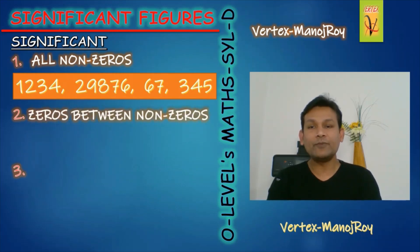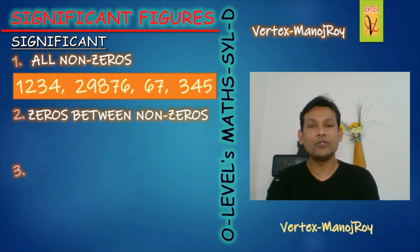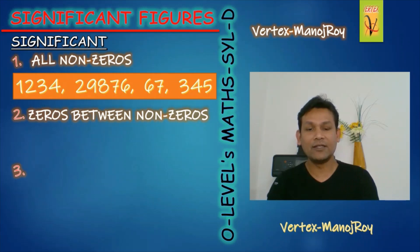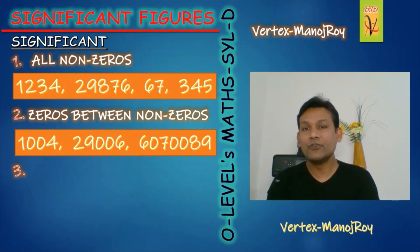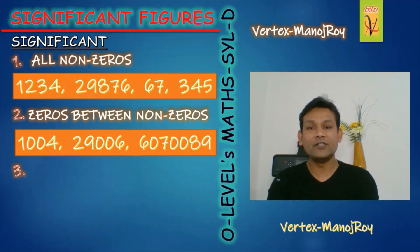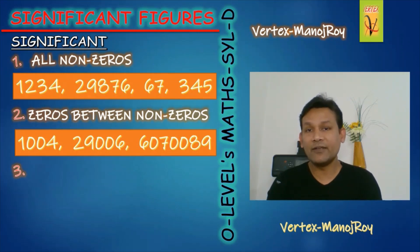Then, zeros between non-zeros. When we have non-zero numbers like 1 and 6, and zeros are between them, all will be significant. For example, 1004 has four significant figures. 29006 has five significant figures. And in 6070809, all the zeros are significant because they are between non-zeros. Non-zero means digits 1 through 9.